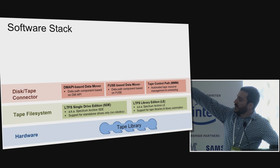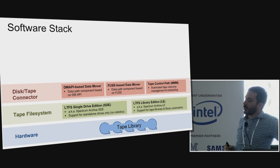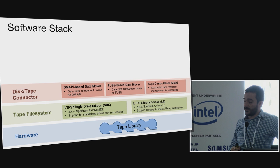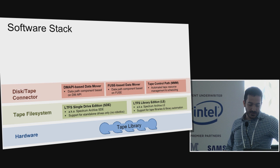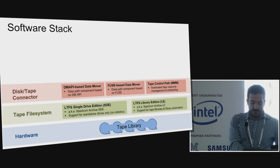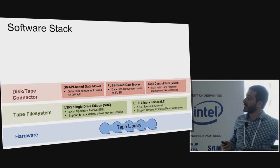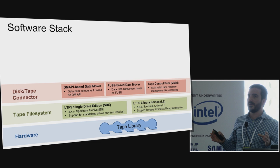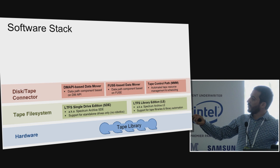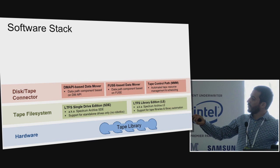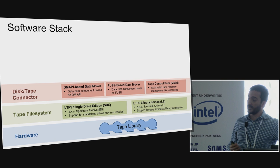This is basically what we're building on top of LTFS and LTFS Library Edition. The first thing we do is build data path and control path components that allow you to move data from disk to tape and vice versa. On the data path, we have two different implementations of a data mover: one relies on DMAPI, a special file system API that not all file systems implement, and the other is based on FUSE, where the data mover creates an overlay file system on top of the disk and tape file systems. The most important piece is the tape control path, which keeps track of all resources in your tape backend and schedules all operations for good performance and resource utilization.